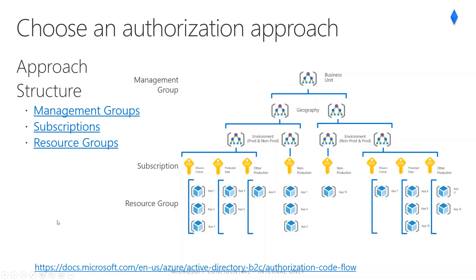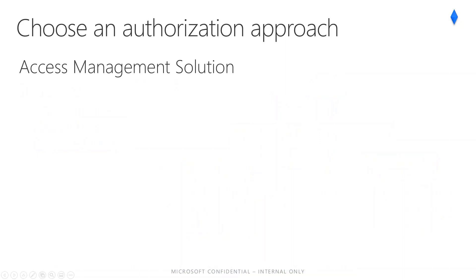A resource group is simply a logical construct that groups multiple resources together so they can be managed as a single entity based on lifecycle and security. For example, resources that share a similar lifecycle, such as resources for an N-tiered application, may be created or deleted as a group. In other words, everything that is born together, gets managed together, and deprecates together goes together in a resource group.